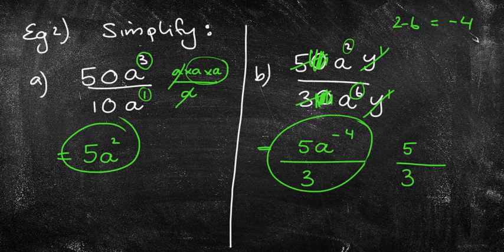I've got my 5 over 3. That's from the 50 divided by 30. But I often start where the a is the biggest. For example, a to the power of 6 is the biggest on the bottom. So I'm going to start on the bottom and say 6 take away 2 is 4. But because I start on the bottom, I'm going to say a to the power of 4. And the y's will cancel out.